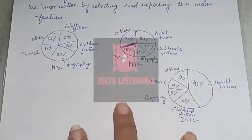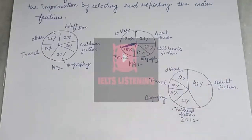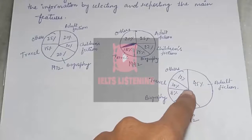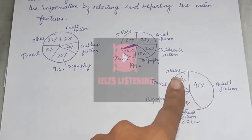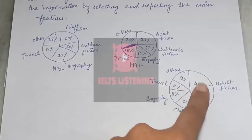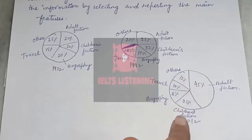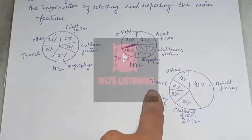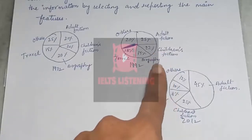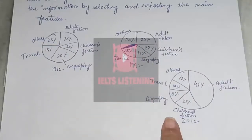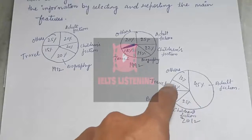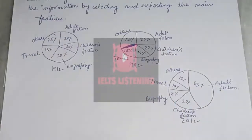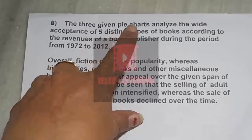In 2012, adult fiction almost gained all the chart — almost half of the books were sold as adult fiction. Children's fiction also increased, while biography again decreased tremendously and reached only 8%. Travel also decreased and others also decreased. So after two decades again, only adult fiction and children's fiction increased and the rest decreased.